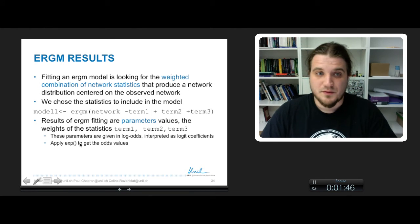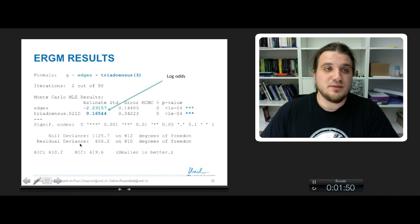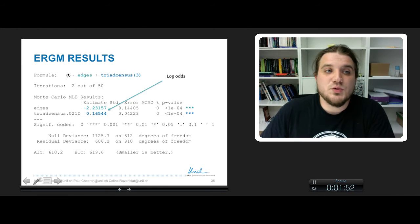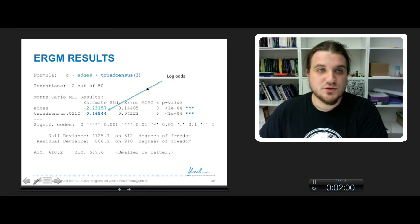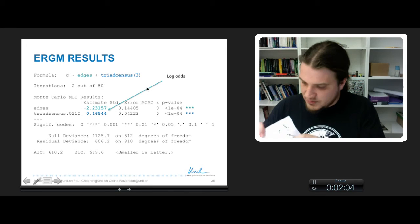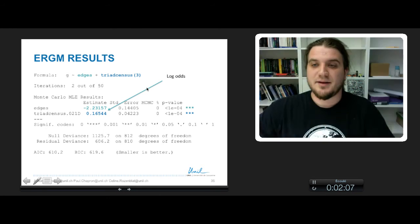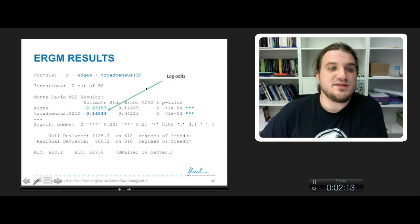Let's say I have a network to analyze. I run my simple model trying to explain network G by term 1, edges (the overall density of the graph), and triad census 3, which is just a 2-star. The triad census 3 is this triad - it's like an out-2-star.